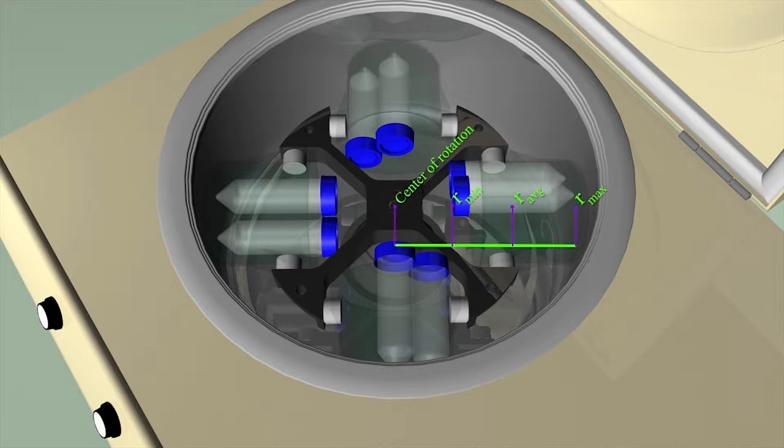It is good to consider all of these values but unless otherwise stated, we'll consider g-forces to refer to the maximum radius as r max for the center of our rotation to the bottom of our tube or bottle.